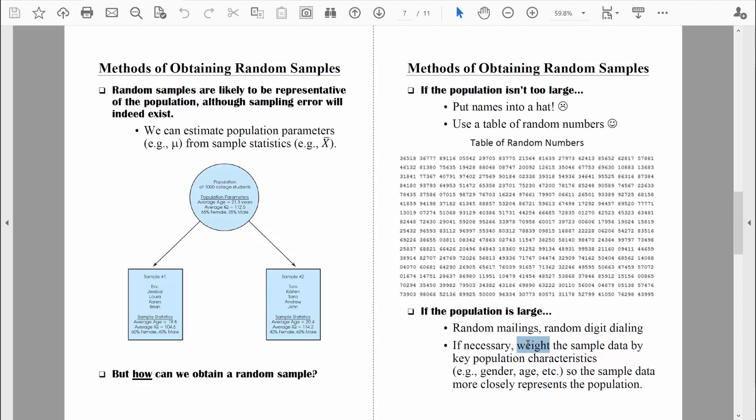So for instance, maybe the researchers will find that 50% of their respondents are women. And that sounds pretty good so far. But historically, they might realize that 55% of the voters are women.